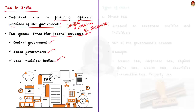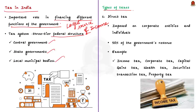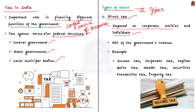Taxation in India is majorly divided into two types: direct taxes and indirect taxes. Direct taxes are imposed on corporate entities and individuals. Note that these taxes cannot be transferred to others. Direct taxes account for almost 50% of the government's revenue in India. The major direct taxes include income tax and corporate tax.